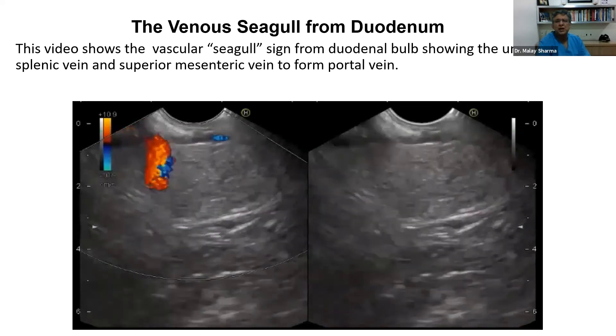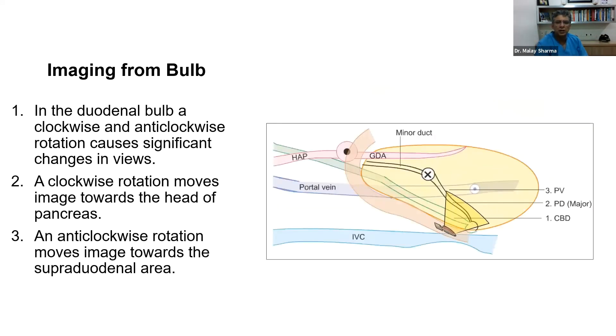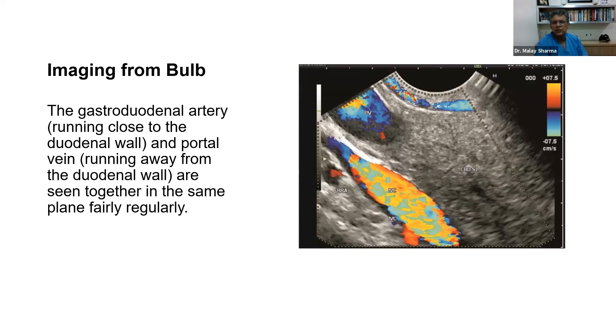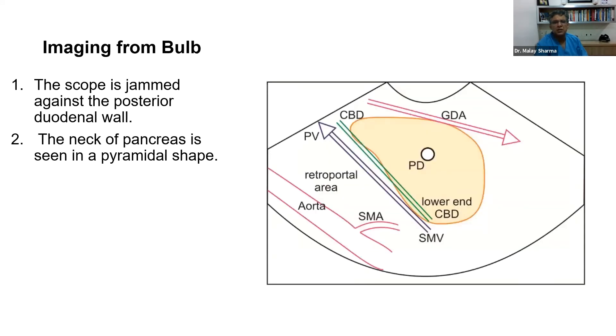The rotation in the pancreas is done, as I said, in a neutral position. You go down, you start rotating, you pull back, you keep on rotating, and then this is the way you see the structures. What is important when you come into the duodenal bulb - you rotate one way, you find the gastroduodenal artery. Rotate the other way, you find the hepatic artery proper. One way you find the lower CBD, the other way you find the upper CBD. These are some of the figures. This is the characteristic neck between the portal vein and the gastroduodenal artery. This is the way that you define the structure of pancreas and you visualize the common bile duct from the duodenum.